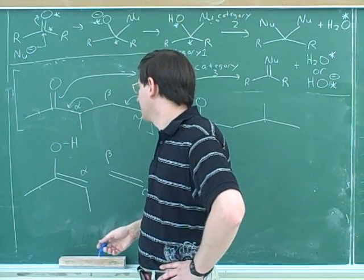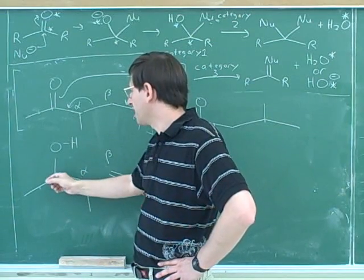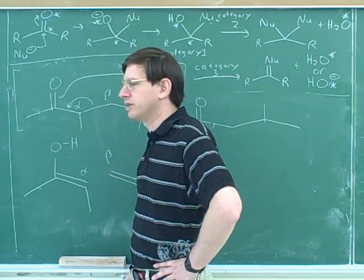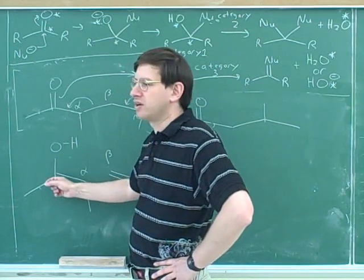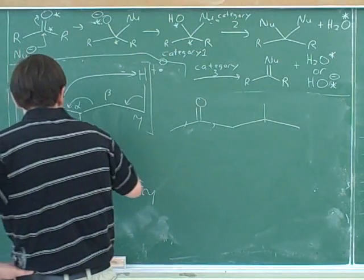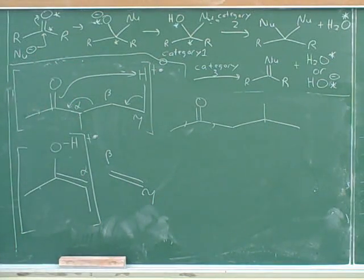Where did those electrons go that used to be in the alpha-beta bond? Well, they formed a new pi bond between the alpha carbon and the former carbonyl carbon. So we basically end up with an enol type arrangement here. And it turns out, according to the textbook, that it's the enol that gets the positive charge and the radical. And the other compound is just neutral.